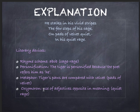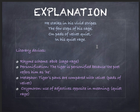Oxymoron is when two opposite things are mentioned in the same line. Here, we can see 'quiet' and 'rage' — meaning anger and being quiet at the same time.